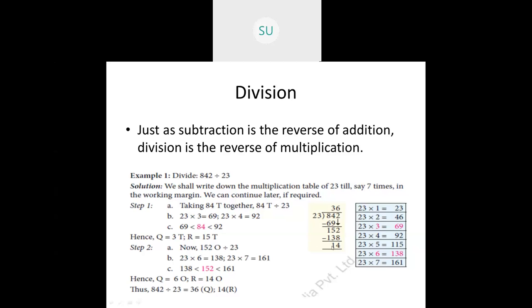The 14 left over is called the remainder and 36 is called the quotient. Here 842 is called the dividend and 23 is called the divisor. This is how you divide two numbers.